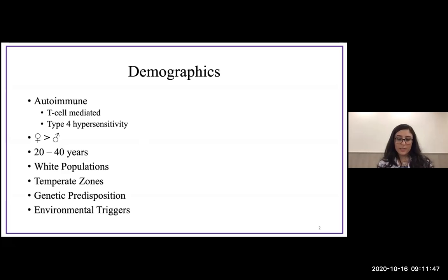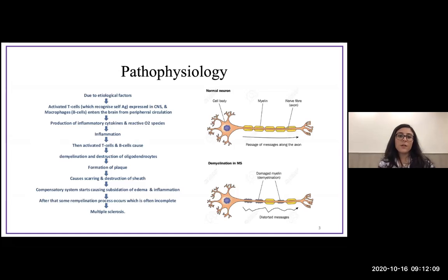It has a genetic predisposition—there's the HLA-DR2 gene. Individuals who have this are more likely to develop multiple sclerosis. There are also environmental triggers such as cigarette smoking, UV radiation, and it's associated with EBV virus as well as HHV-6.